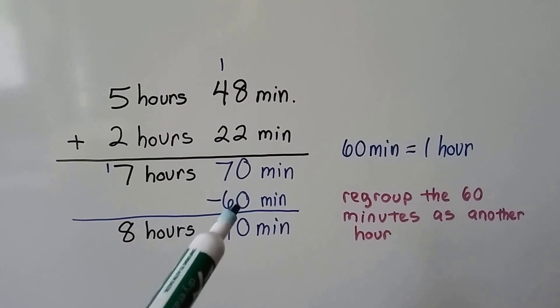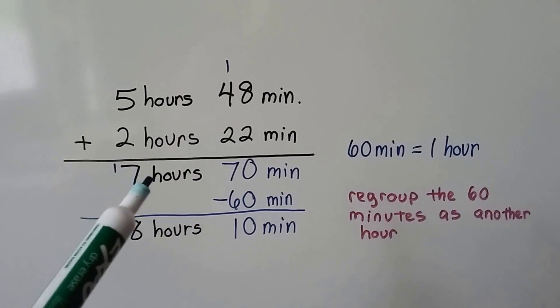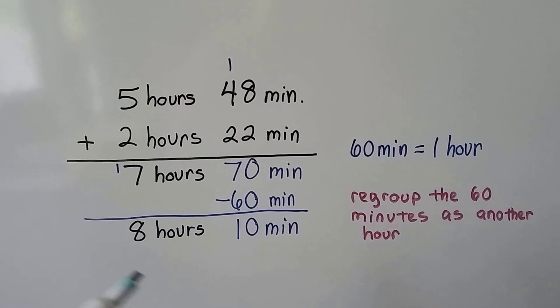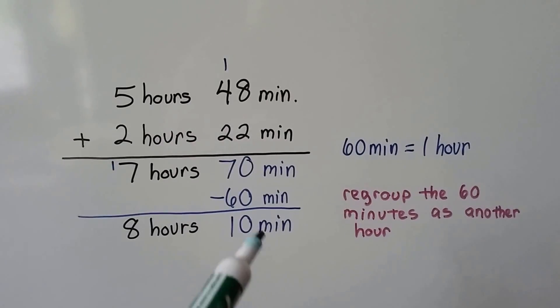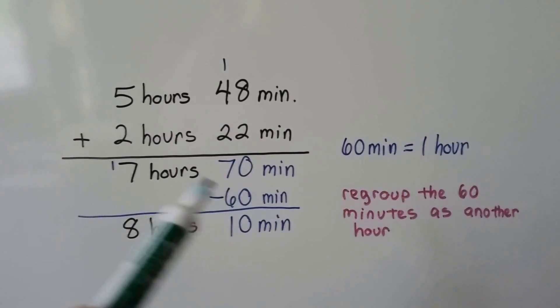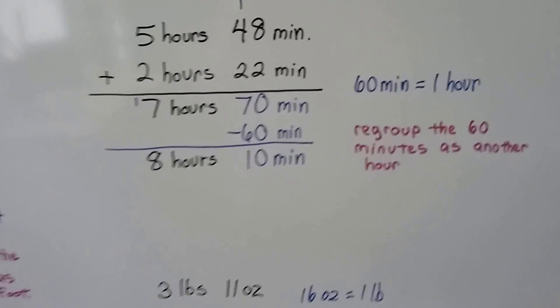We can pull a 60-minute hour out of this 70 minutes and give it to the hours to regroup it. We've got 10 minutes left over, so we got 8 hours and 10 minutes. We just regrouped 60 of these minutes as an hour.